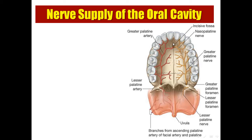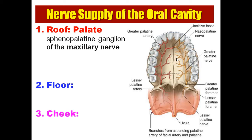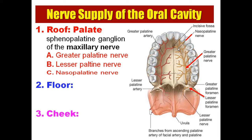Regarding the nerve supply of the oral cavity, I will talk about the nerve supply of the roof, the floor, and the cheek. The palate — hard palate and soft palate — is supplied by the sphenopalatine ganglion of the maxillary nerve. There are three branches: the greater palatine nerve, the lesser palatine nerve, and the nasopalatine nerve.